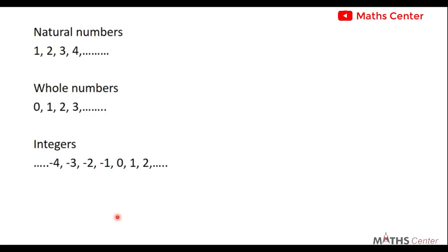Rational numbers also include the set of integers. Integers are negative and positive whole numbers, going from negative infinity to positive infinity — for example, -4, -3, -2, -1, 0, 1, 2, 3 and so on. They are all rational numbers.